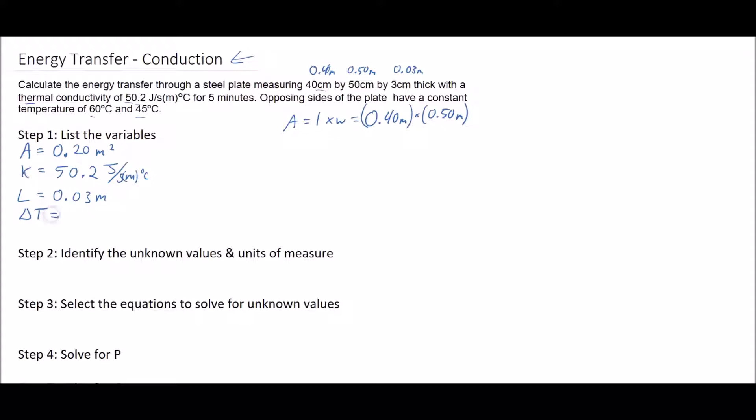We have our delta T capital T, our change in temperature. In this case our difference in temperature, so our delta T is 60 degrees Celsius on one side and 45 degrees Celsius on the other, so delta T is 15 degrees Celsius.